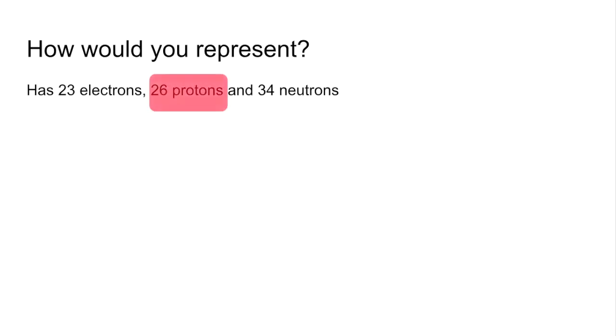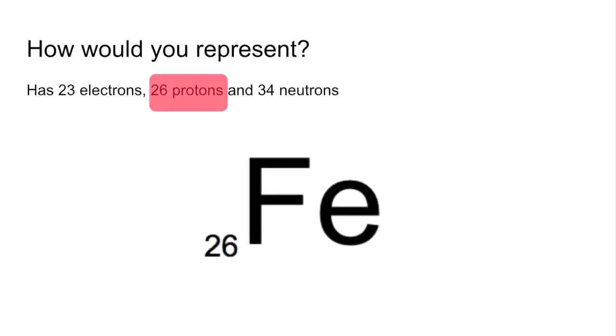So the obvious place to look at first is the number of protons, that's telling us that we've got iron. And the next thing I'm going to look at is the electrons, are they the same? No, there are 3 fewer electrons than protons, so it's got a 3 plus charge.